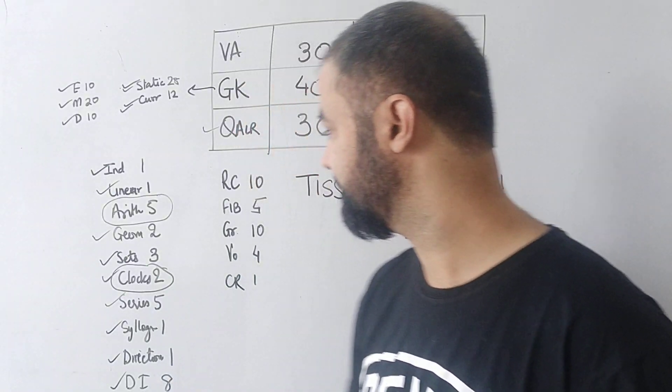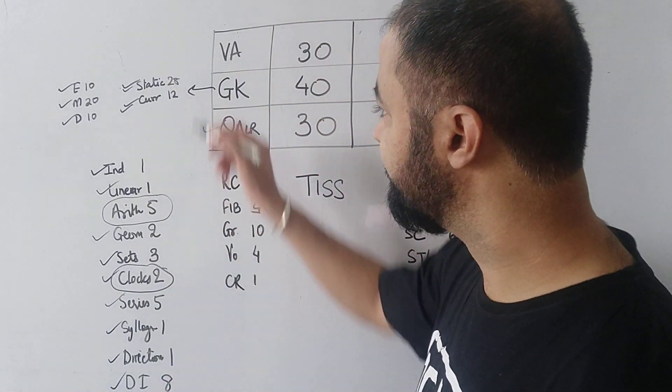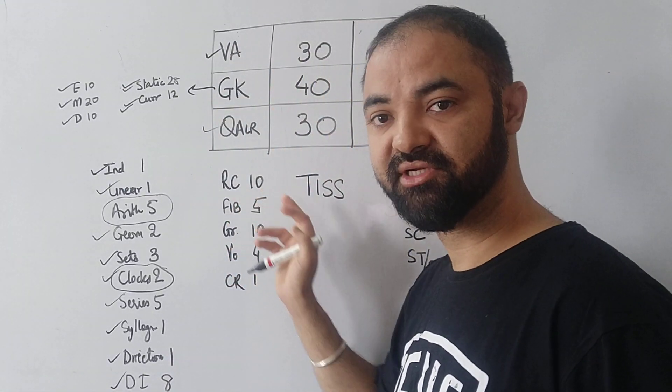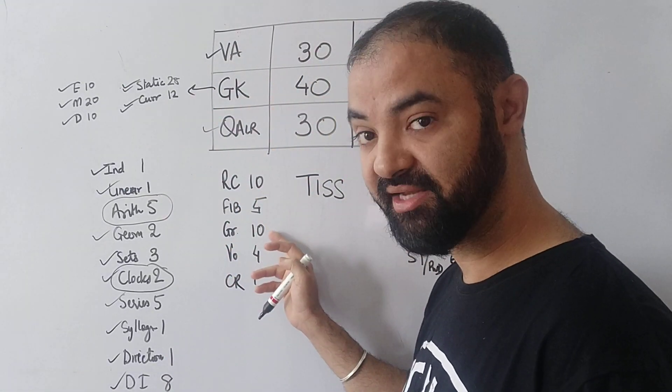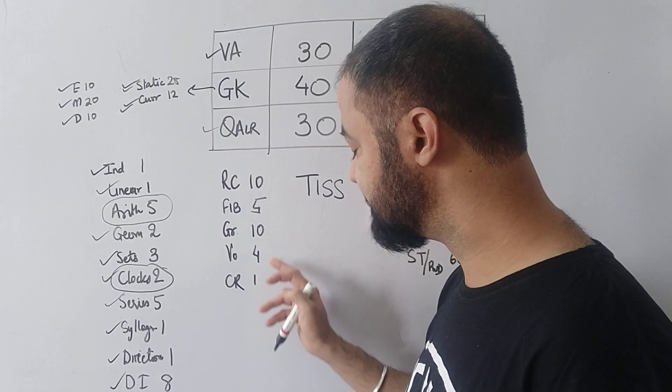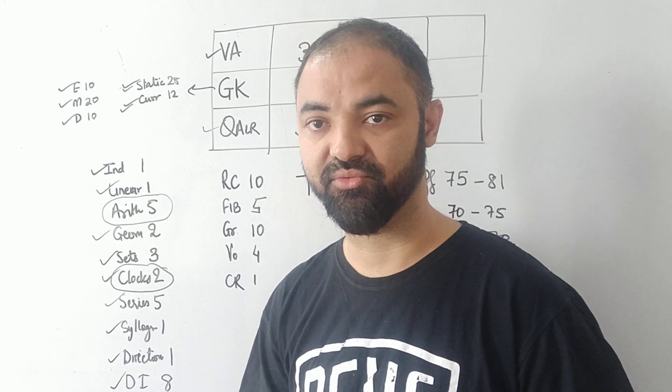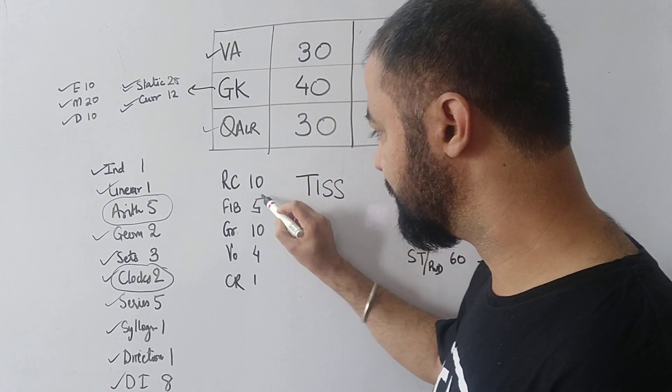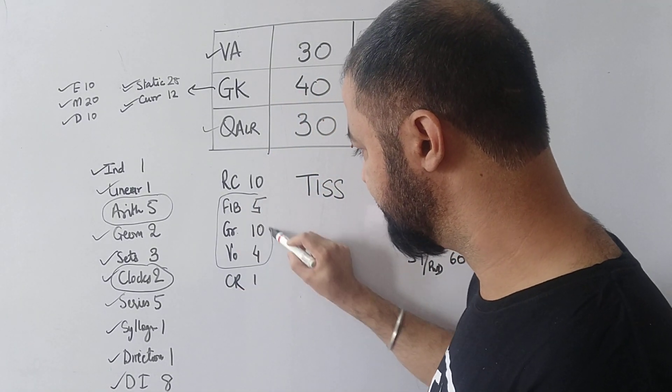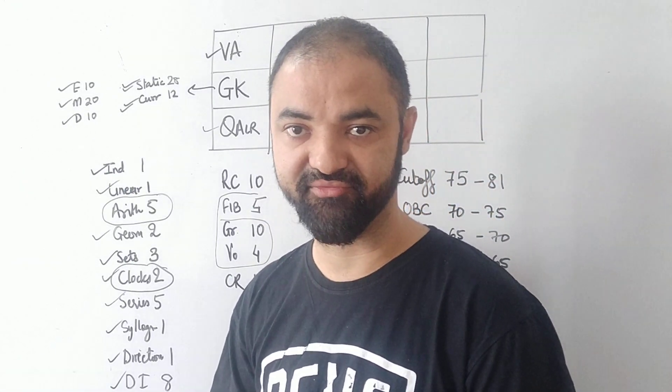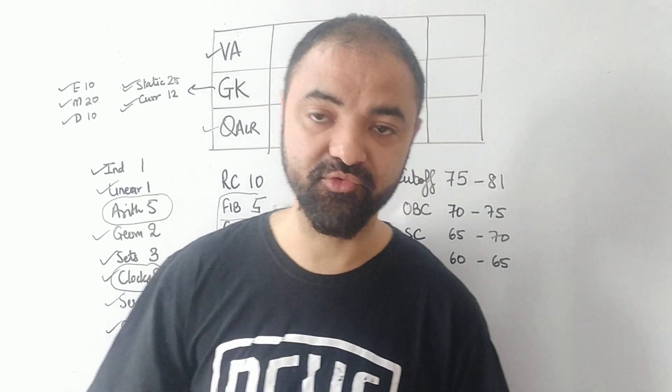From the verbal point of view, the level of difficulty will not be that much high. RC ten questions, fill in the blanks five questions, grammar ten questions, critical reasoning one, and vocabulary four. That's your breakup for the verbal point of view. I need to focus on vocabulary and grammar because these two areas are the main areas which are normally left ignored by everyone.